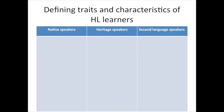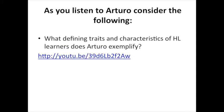Let's start with the learner. There are three populations we need to know in order to understand our heritage language learners — not just understanding HL learners, but understanding how they are in some ways like native speakers and in some ways like L2 learners. I want you to think in terms of defining traits — things that must be there to be considered a heritage language learner — and characteristics, which can be there but don't necessarily have to be.